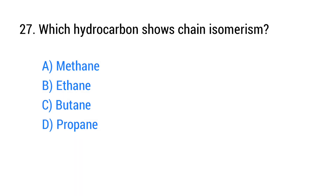Question number 27. Which hydrocarbon shows chain isomerism? The right answer is option C: Butane.